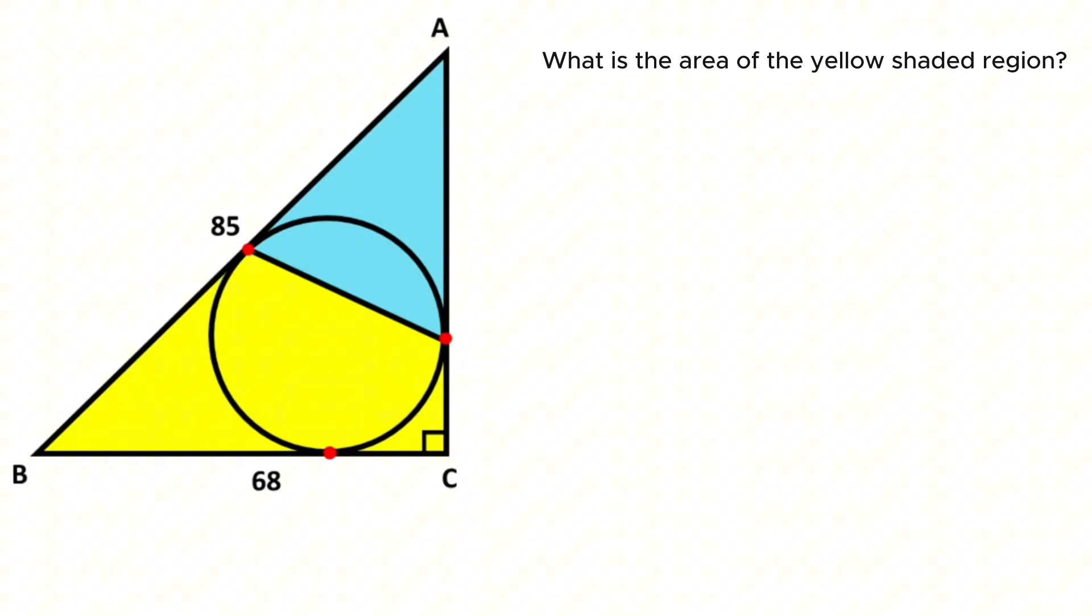Hello everyone. In this video you have one circle, one right triangle, and these red points are given as tangent points. This length is given as 68, and the hypotenuse is given as 85. The question is: what is the area of the yellow shaded region?